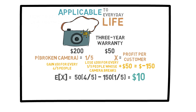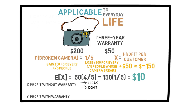As a customer, should I buy the warranty? Let's say that if I don't buy the insurance, my profit will be X, and if I do buy it, my profit will be Y. If I don't buy the warranty, two things could happen: either I break the camera or I don't. If I don't break it, nothing happens, so the profit is $0 with a probability of 4 over 5. On the other hand, if I do break it without having bought the insurance, I will lose $200, which is the replacement cost. This will happen with a probability of 1 over 5. The expected value of X is 4 over 5 times 0, minus 200 times 1 over 5, which is minus $40.